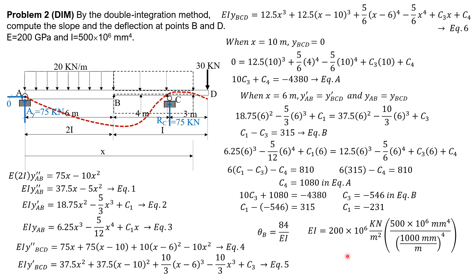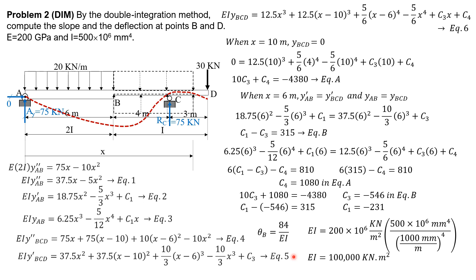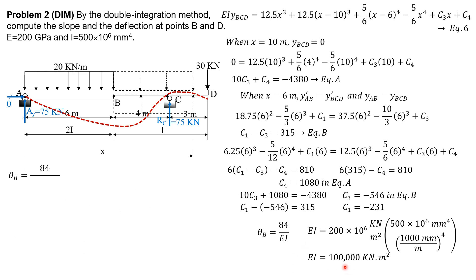The value of EI: 200 times 10 to the 6 kilonewton per meter squared (converted from gigapascals), times I of 500 times 10 to the 6 mm to the 4th converted to meters to the 4th (divide by 1000 to the 4th). So EI equals 100,000 kilonewton meter squared. Therefore theta B equals 84 divided by 100,000, which is 8.4 times 10 to the negative 4 radians.